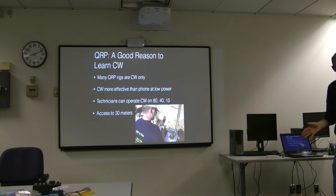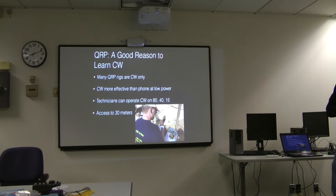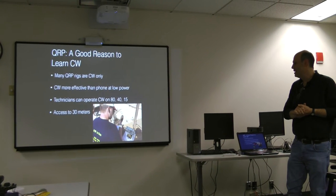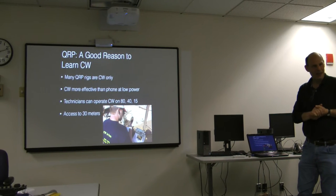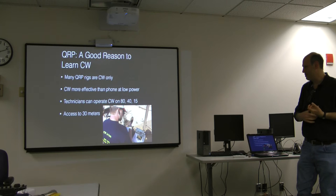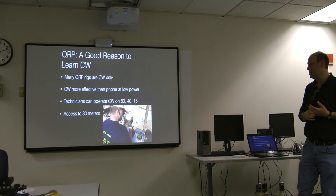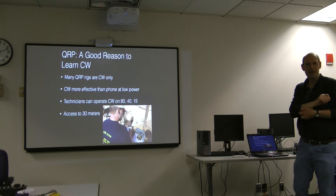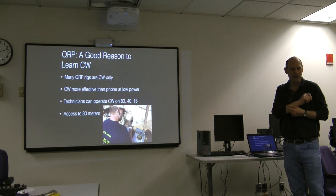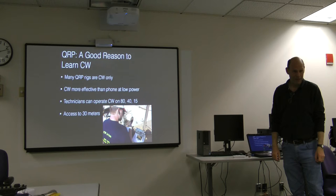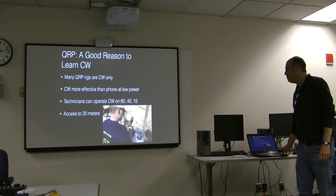I want to put in a message for CW. Most QRP rigs work on CW only. People can hear you better, you don't have to yell as loud. And technicians can operate CW on three bands without upgrading on HF frequencies. Also, if you do upgrade to general or higher, you have access to the 30 meter band, which is a low power band with a 150 watt limit. It's all CW or digital, there's no contesting on it, so it tends to be a lot of DX and leisurely operations. I like 30 meters, it's really a nice band.